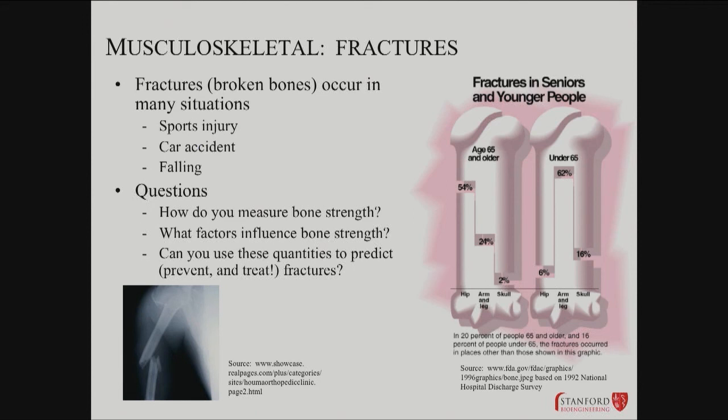Increased risky behavior and limb use drives fractures in people under 65. The hip joint itself, particularly at the ball and socket joint, is quite susceptible to weakening as people get older. This is something we'd like to quantify and model. Questions arise: how do you measure bone strength, what factors influence bone strength, how does it deteriorate over time and why, and can we predict, prevent, and treat fractures?